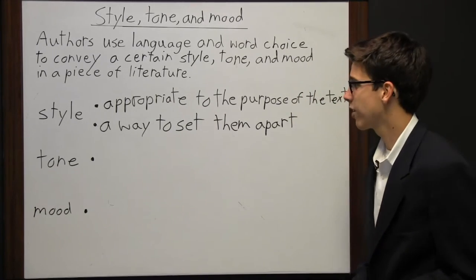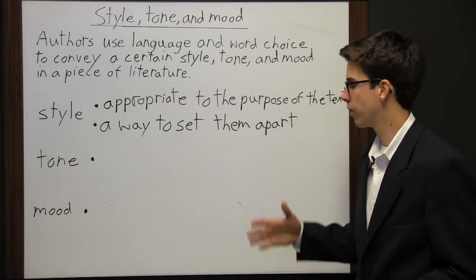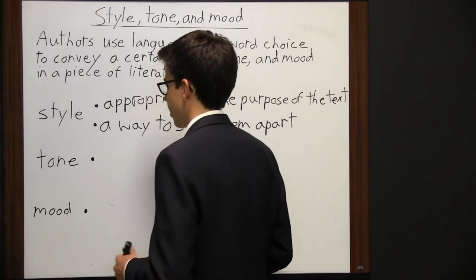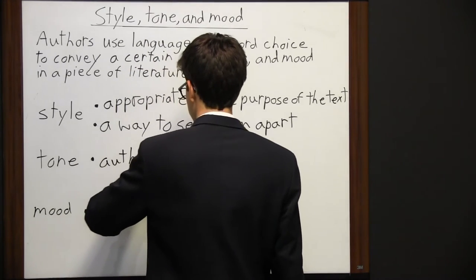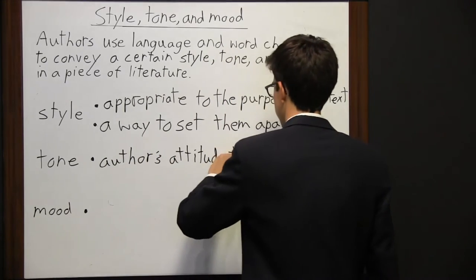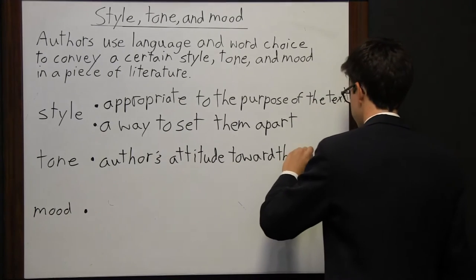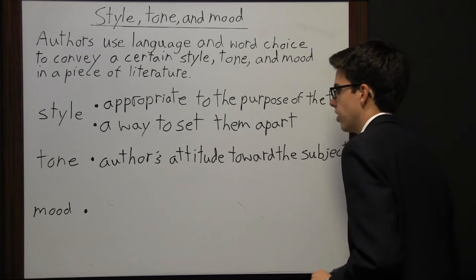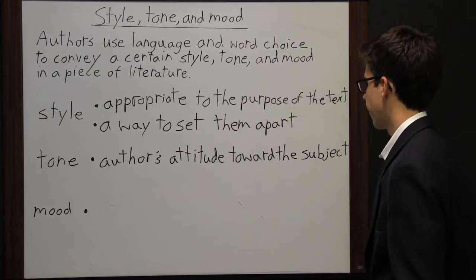Sometimes this style is so strong that you could read a piece of writing and not know who wrote it, but guess who wrote it because of the style. Now the second thing we're going to talk about is tone, which is the author's attitude toward the subject — basically the author's attitude towards whatever the author is writing about.